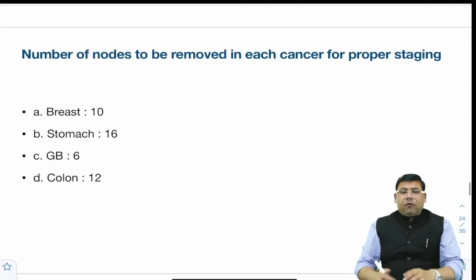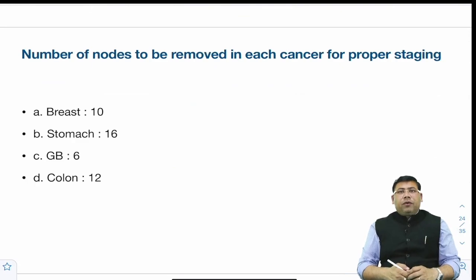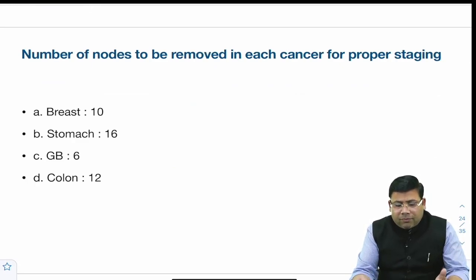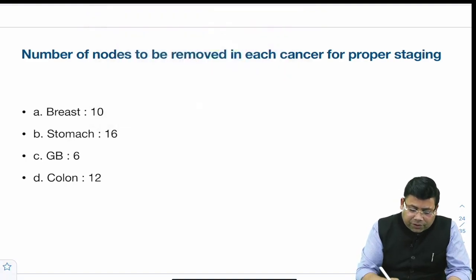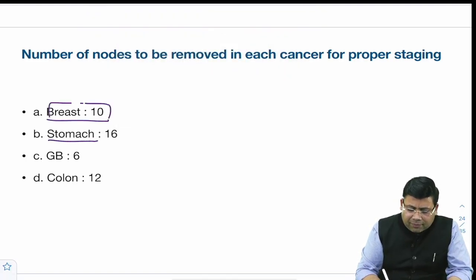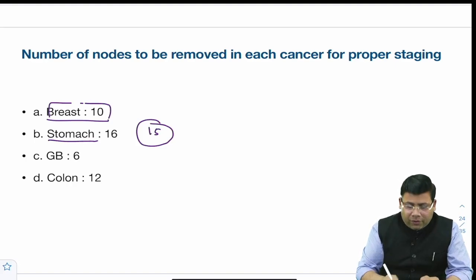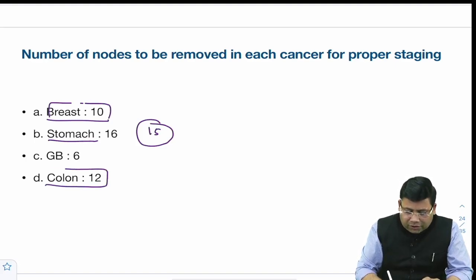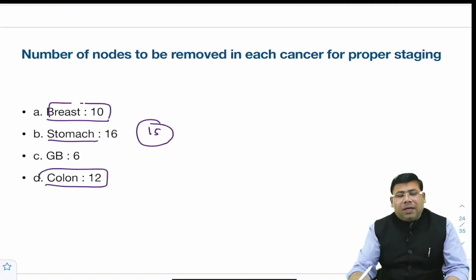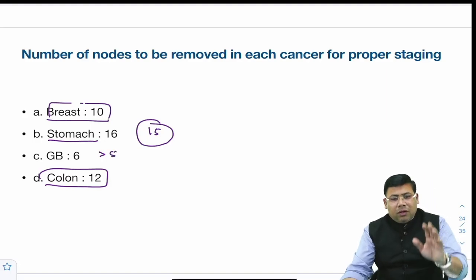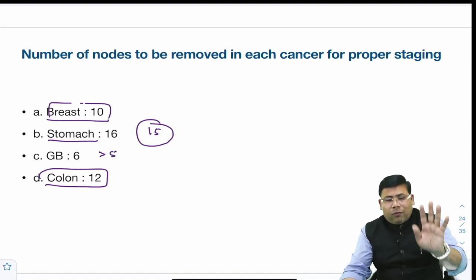There was a match-the-following question on number of nodes removed in cancer staging. For breast, remove 10 nodes; for stomach, 15–16 is the ideal count; for colon, 12 nodes; for gallbladder, more than 5 is justifiable.